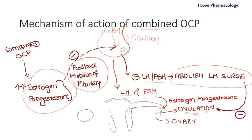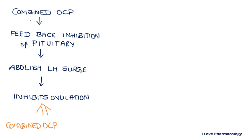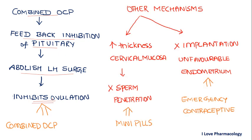The main mechanism of combined oral contraceptive pills is to inhibit ovulation by abolishing the LH surge. This abolition occurs through feedback inhibition of the pituitary, so there is no release of LH or FSH. When COC pills are given, feedback inhibition of the pituitary causes abolition of the LH surge, ultimately leading to inhibition of ovulation.